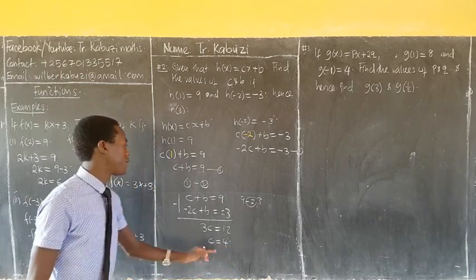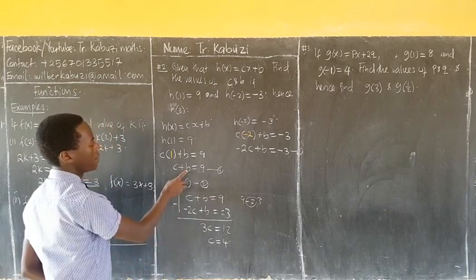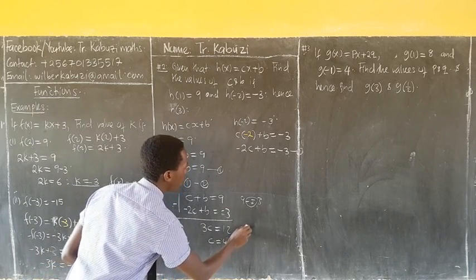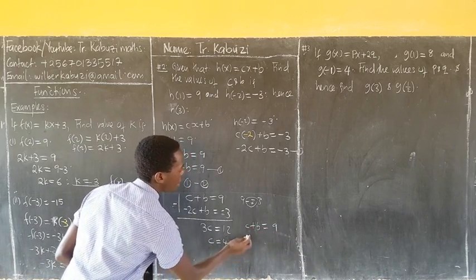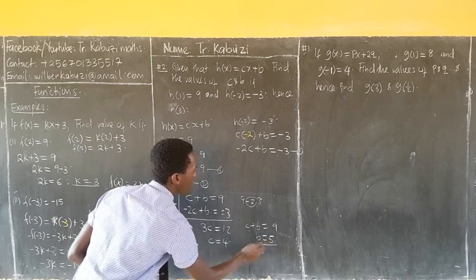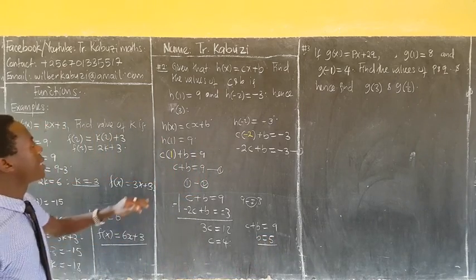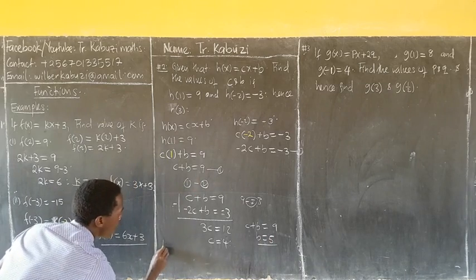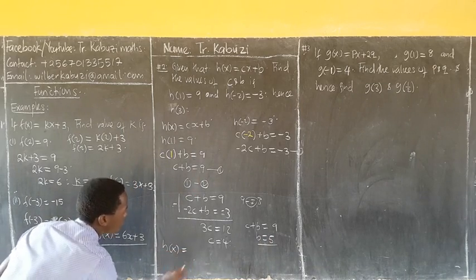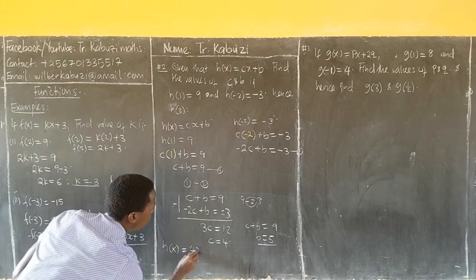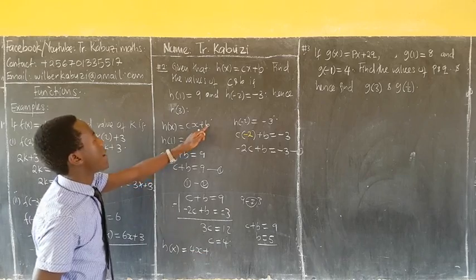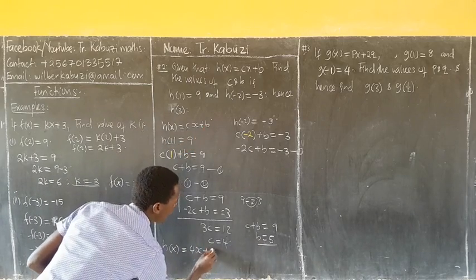Now, because this is 4, when you come here and look, you can see that from my C plus B equaling to 9, if my C is 4, your B will be 5. So writing this equation back, now my H of x becomes my C is 4, so 4x then plus my B is 5.